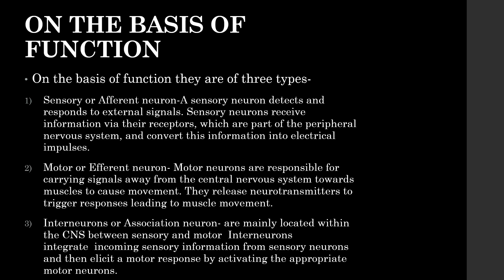On the basis of function, neurons are of three types. Sensory or afferent neurons detect and respond to external signals; they receive information via their receptors, which are part of the peripheral nervous system, and convert this into electrical impulses. Motor or efferent neurons are responsible for carrying signals away from the central nervous system towards the muscles to cause movement; they release neurotransmitters to trigger responses leading to muscle movement. Interneurons, or association neurons, are mainly located within the CNS between sensory and motor neurons; they integrate incoming sensory information and elicit a motor response by activating the appropriate motor neurons.